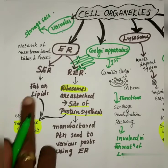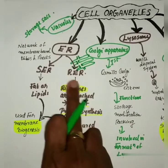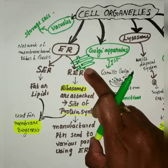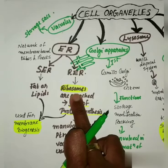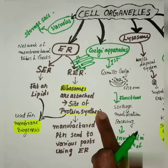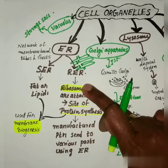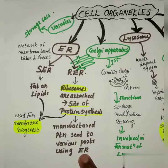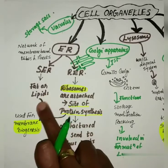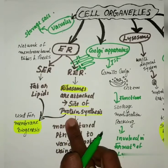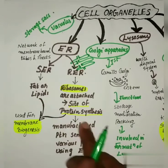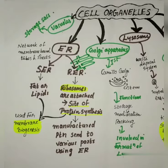Endoplasmic reticulum is of two types: smooth endoplasmic reticulum (SER) and rough endoplasmic reticulum (RER). The name rough endoplasmic reticulum comes from the ribosomes present on the walls of the endoplasmic reticulum. RER is the site of protein synthesis. Proteins synthesized in the ribosomes are sent to various parts of the cell using the endoplasmic reticulum. SER synthesizes fats or lipids. The fats synthesized by SER and proteins synthesized by RER are used for membrane biogenesis — the building up of the cell membrane using lipids and proteins.